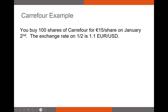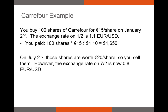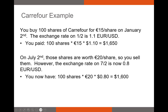For example, you buy 100 shares of Carrefour — a French grocery chain, kind of like Kroger — for 15 euros per share on January 2nd. The exchange rate on that day is 1.1 dollars per euro, so you're paying 1.1 times 15 euros, or $1,650 for these 100 shares. You're taking your dollars, converting them to euros, and buying the 100 shares. On July 2nd, those shares are worth 20 euros per share, so you sell them. However, the exchange rate on July 2nd is now 0.8 euros per U.S. dollar.